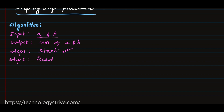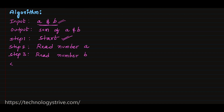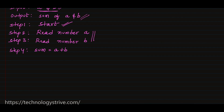Step two is read number a. Step three: we have to read another number which is b, so read number b. Step four: once we have the numbers we perform an action to get the desired output. We add a and b and store the result in variable sum, so sum equals a plus b.